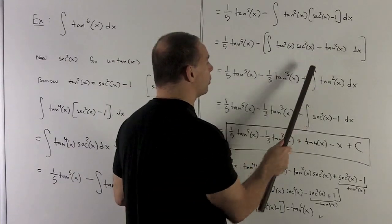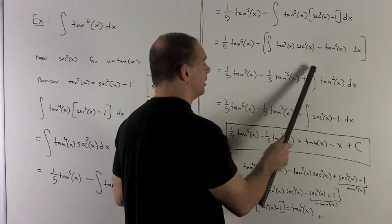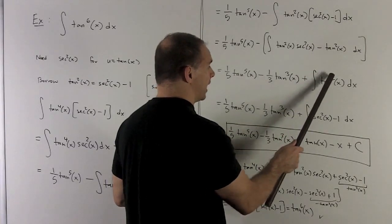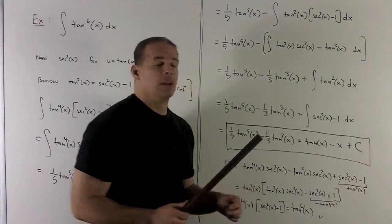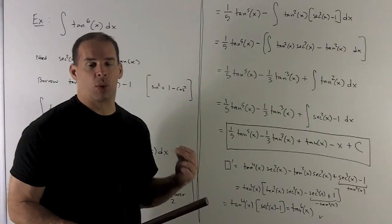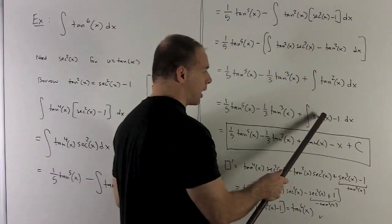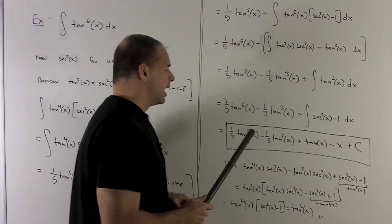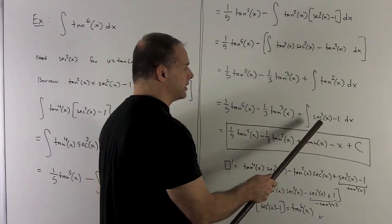Minus sign is going to carry through. I'm going to have plus indefinite integral of tan squared x dx. We only have a tan squared to borrow, so I just rewrite it as secant x squared minus 1. And now we know how to do both of these.